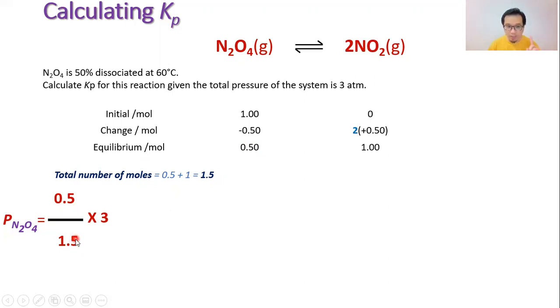You need to always remember: take your mole fraction, multiply with total pressure in order to get the partial pressure of N2O4. Now very important, just make sure you remember how to calculate this particular partial pressure. We're going to move on to calculate the partial pressure for NO2.